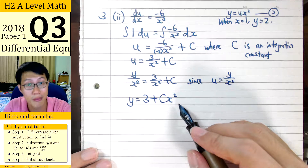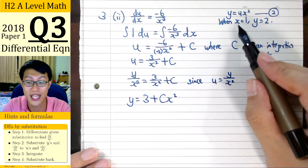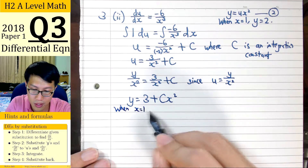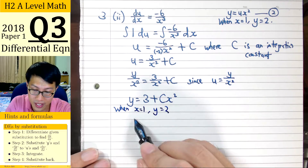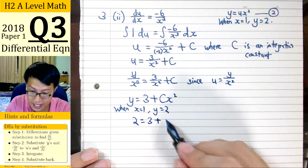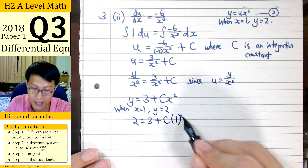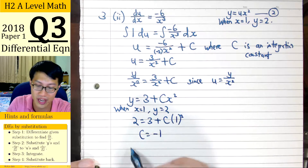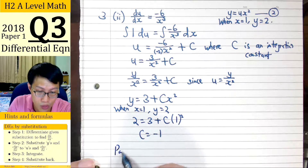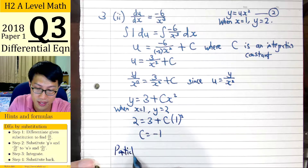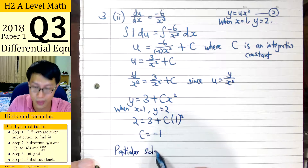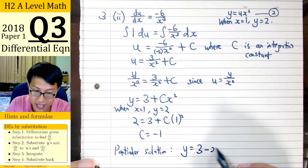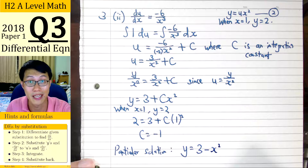To get the particular solution, we substitute the given initial conditions. We are told that when x equals 1, y equals 2. Substituting: 2 equals 3 plus c times 1 squared, giving us c equals 2 minus 3, which is minus 1. Substituting back, the particular solution is y equals 3 minus x squared. This solves Part 2 of the question.